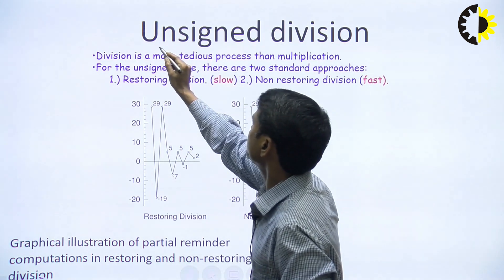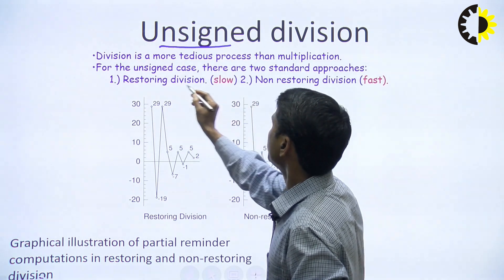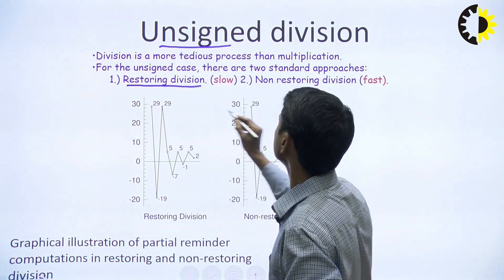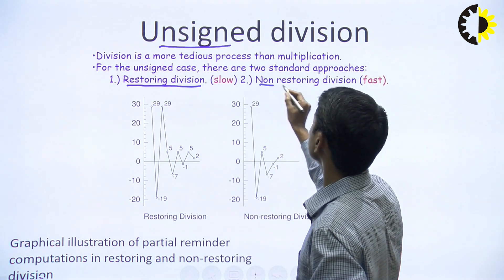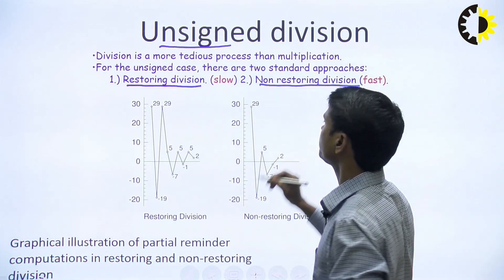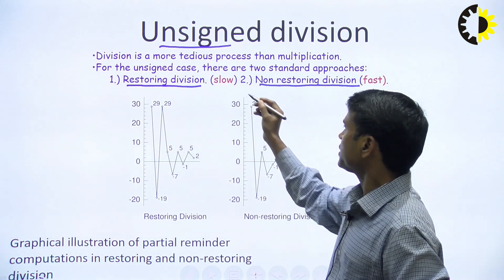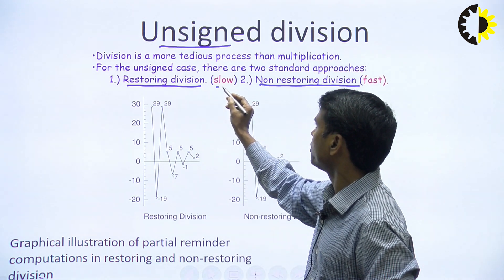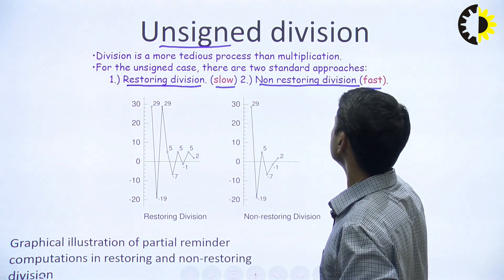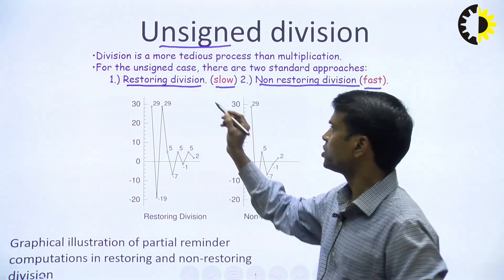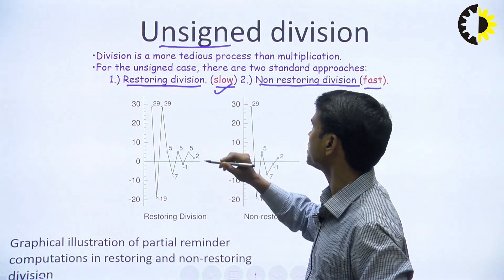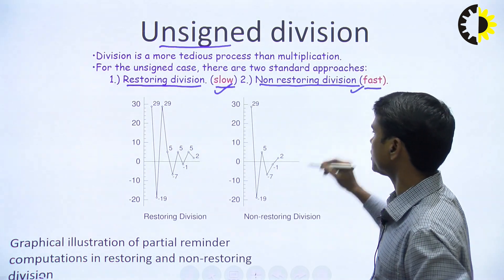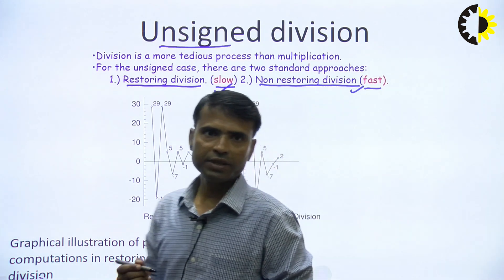Unsigned division can be implemented using two methods: the first is called restoring division and the second is non-restoring division. An important attribute of both algorithms is that restoring division is a slow process and non-restoring division is a fast process, as explained with the following diagram.